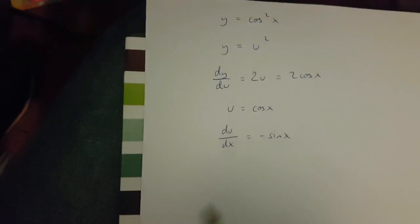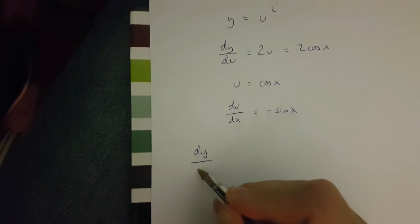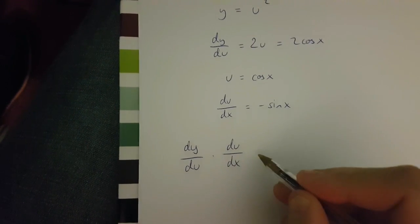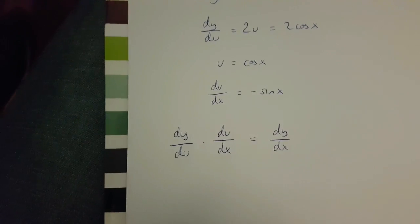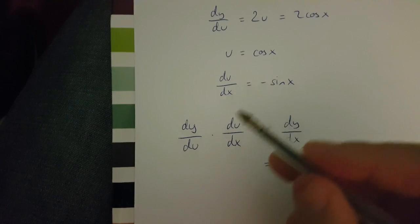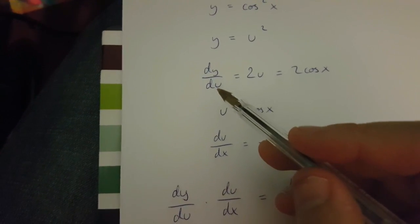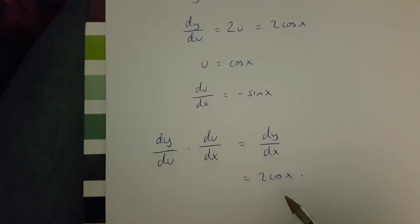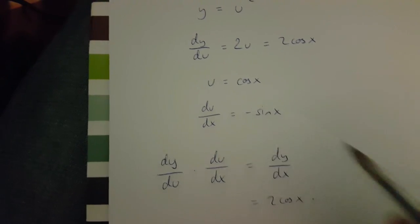Now the chain rule goes like this: dy over du times du over dx equals dy over dx. But what is dy over du, and what is du over dx? Well dy over du is 2 cos x, and this is going to multiply du over dx, which is minus sin x.